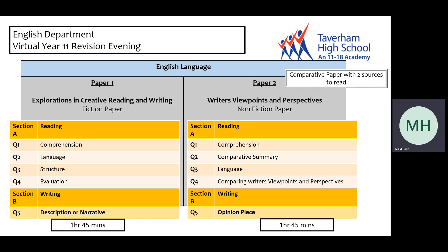This slide gives you a further breakdown of the questions for English Language for your own reference. The greatest difference between the papers is that paper one is the fiction paper and students will only have one fictional source to read, whereas paper two has two sources to read — one 19th century text and one 20th century text — and students will have to compare both of those sources.